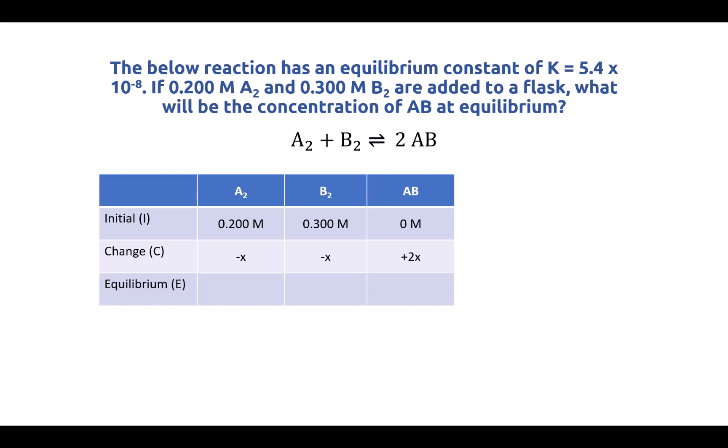Now the amount AB gets a plus sign because we're gaining it. We can't lose anything from zero molar, we can only gain AB, and the two comes from the fact that there is a two coefficient in the equilibrium equation. So every time you react an A2 molecule, you're going to make two equivalents of AB. So it has to be twice as much for AB than what we lost for the A2 or for the B2.